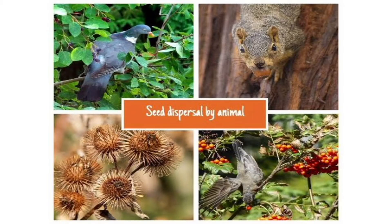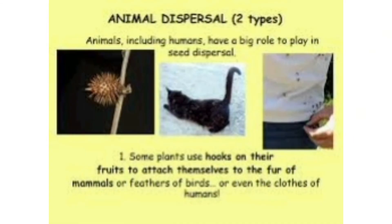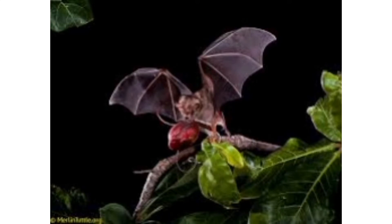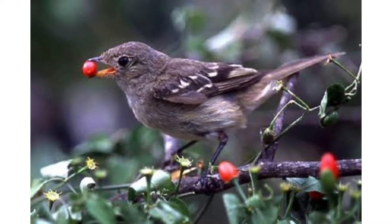Second, dispersal by animals. Many kinds of ripe fruits are eaten by birds, squirrels, and bats. These animals often take fruit to far away places. Most seeds eaten by animals come out in their droppings undigested. People also help in spreading seeds far away from where they grow naturally. The hooked spines of certain seeds stick to the feathers of birds and the hair of animals, and reach far away places.